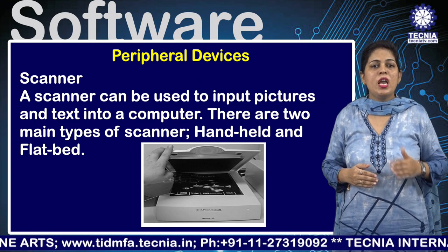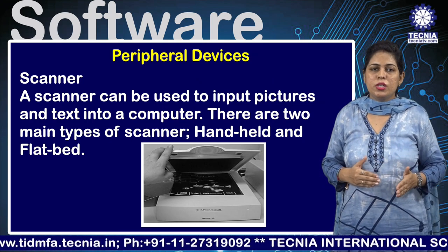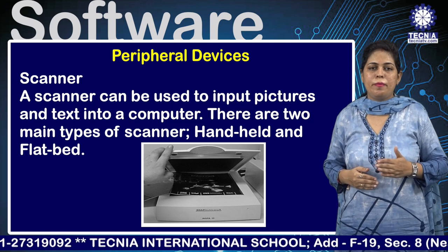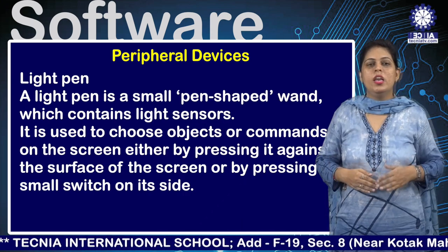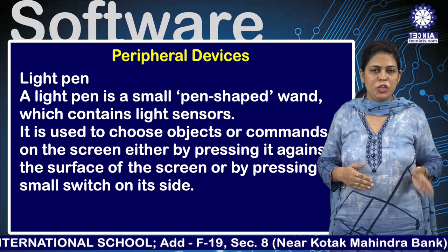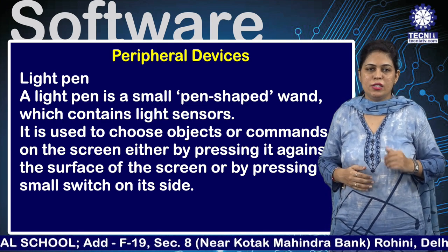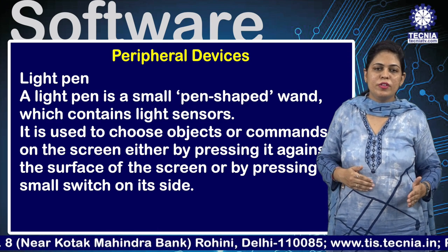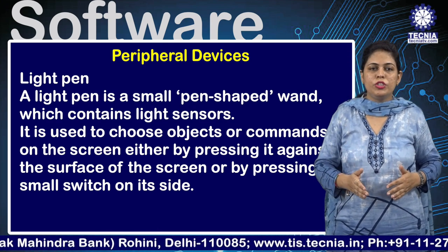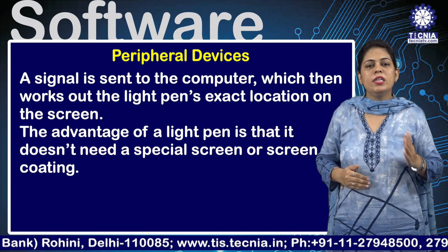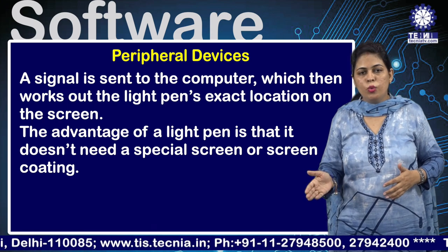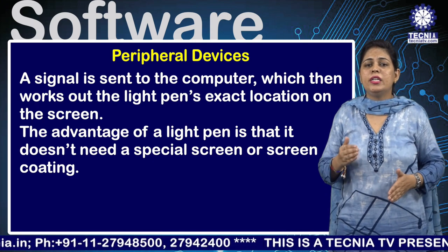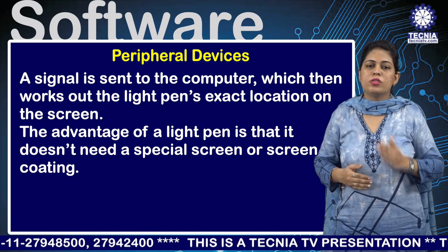A scanner can be used to input pictures and text into a computer. There are two main types: handheld scanner and flatbed scanner. A light pen is a small pen-shaped device containing light sensors, used to choose objects or commands on the screen by pressing it against the surface or pressing a small switch on its side. A signal is sent to the computer, which works out the light pen's exact location on the screen. The advantage of a light pen is that it doesn't need a special screen or screen coating.